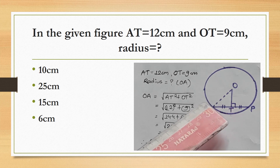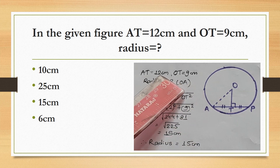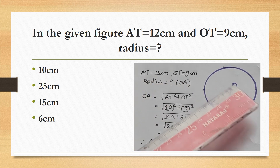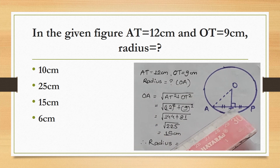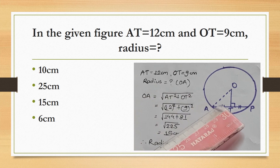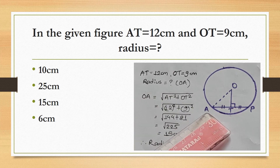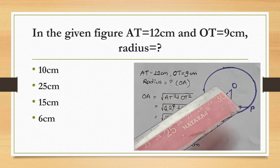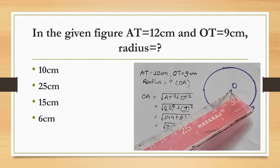Next question: look at the figure. Find the radius. From the figure, AT = 12 cm, OT = 9 cm. AT is equal to TP. We need to find OA (the radius).